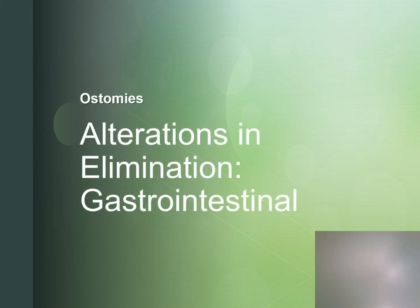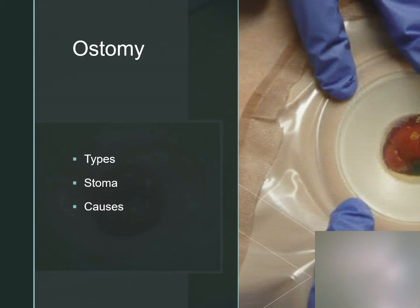Alterations and elimination: gastrointestinal ostomies. An ostomy is an opening between an internal body structure and the skin. It may be an ileostomy, which is placed in the distal small intestine, or a colostomy, which is placed in the colon. The stoma is the opening on the exterior abdominal surface.